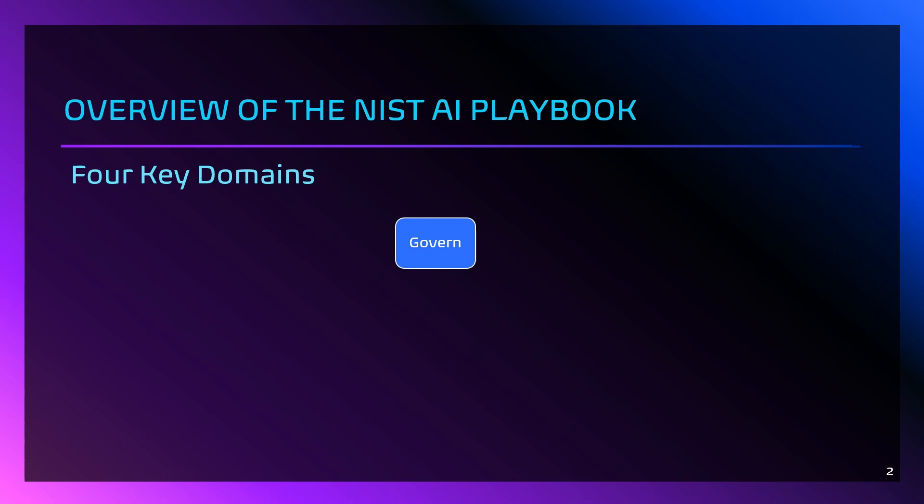The next domain is MAP. The MAP domain allows for the identification and documentation of AI risks throughout the system life cycle. It also allows for the understanding of dependencies and potential failure points. An example is mapping biases in an AI hiring tool that screens candidates.